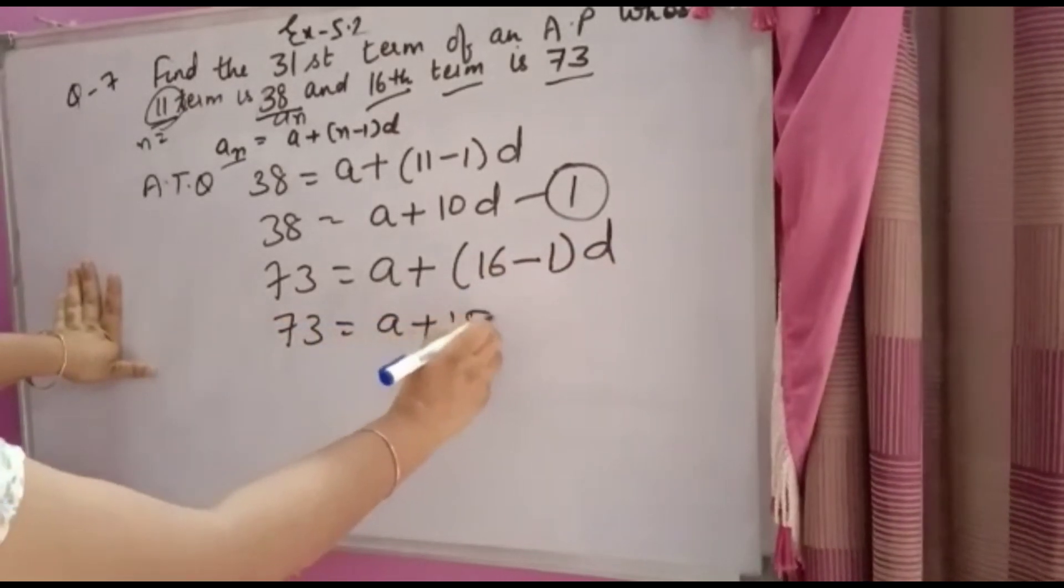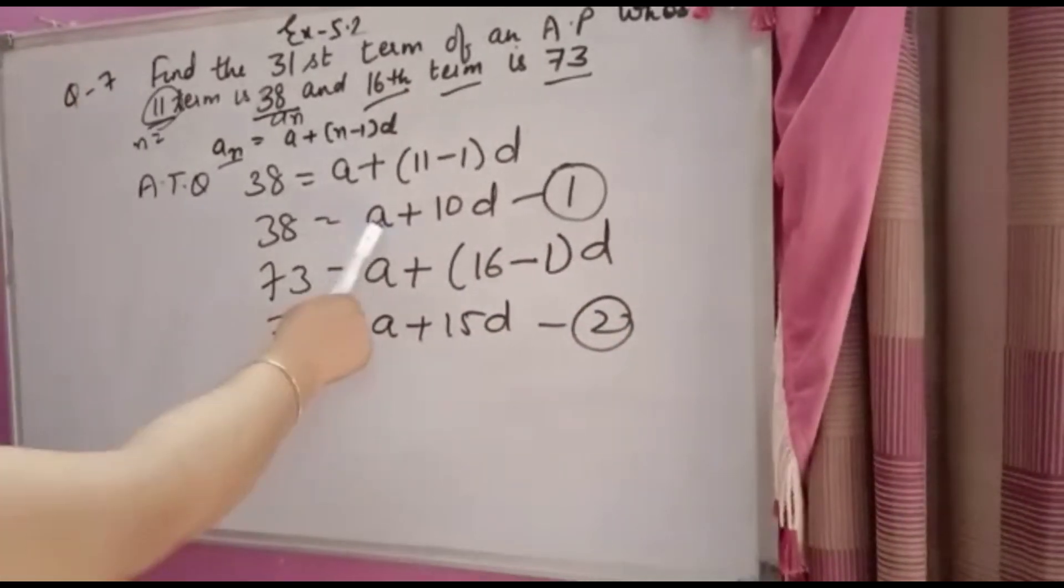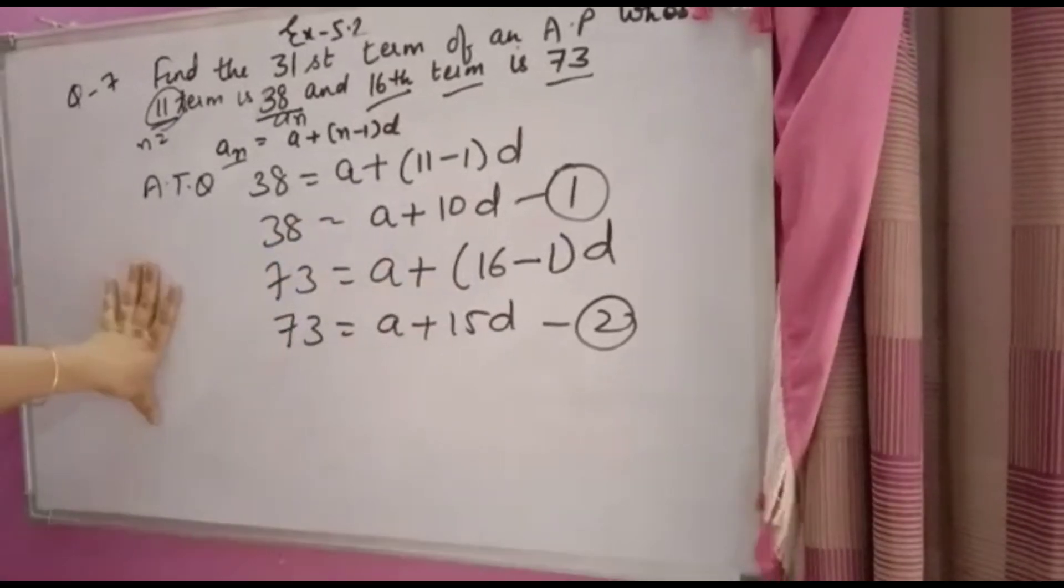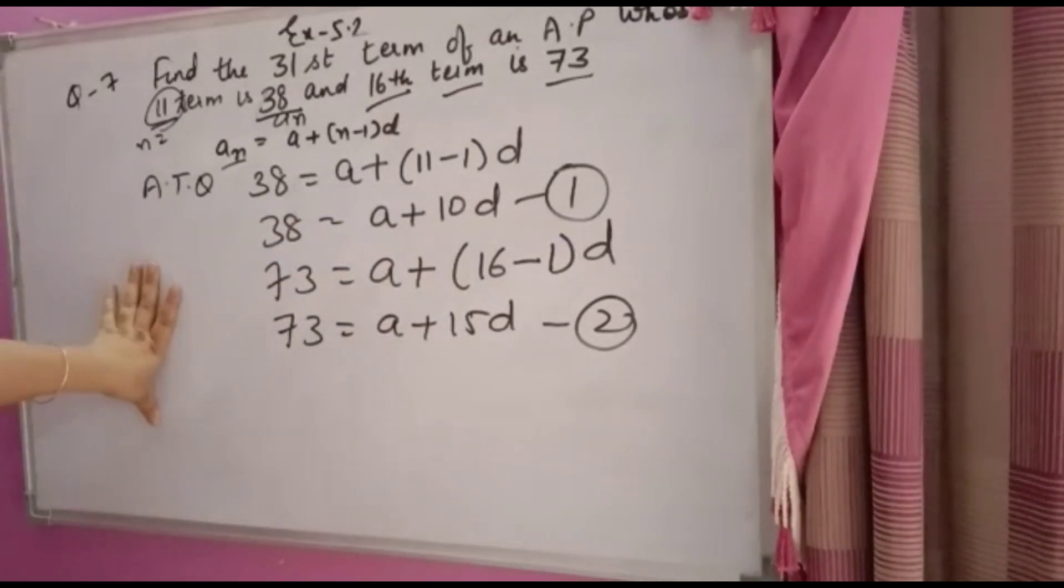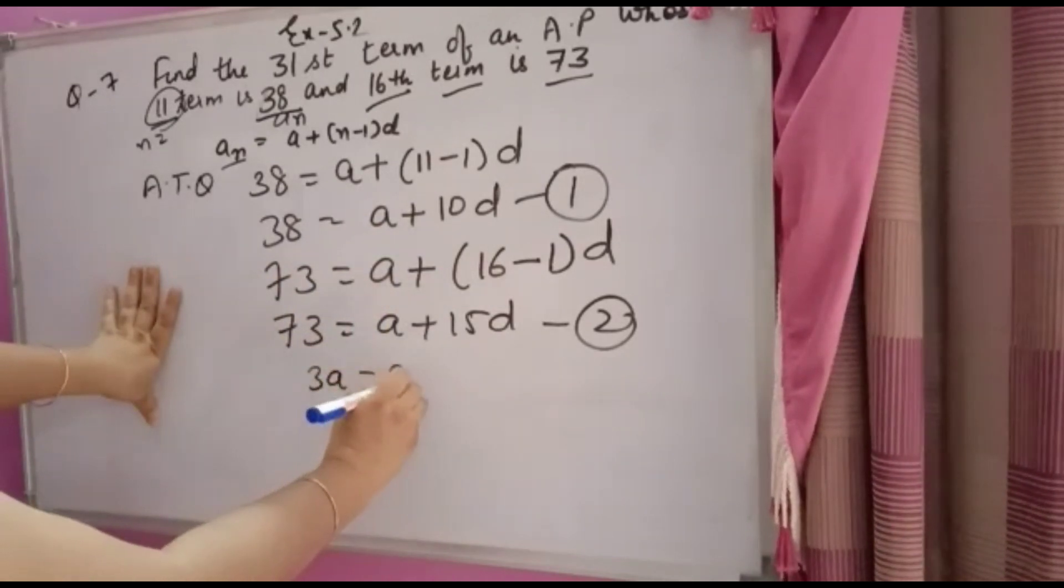Now, as you have done in linear equations with two variables and two equations, you will use the method of elimination. The coefficient of A is the same in both equations, so you will subtract them.